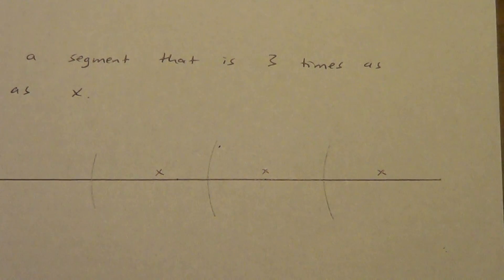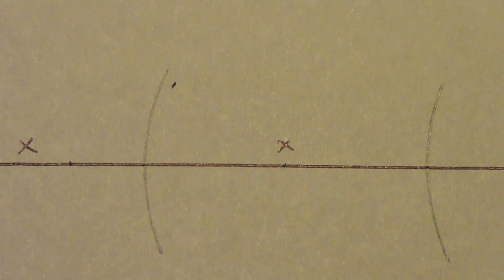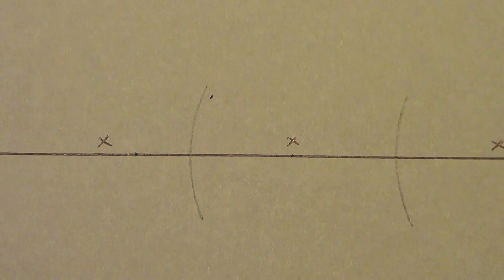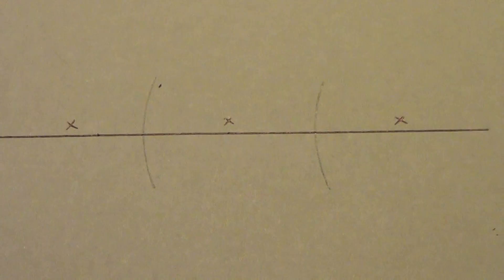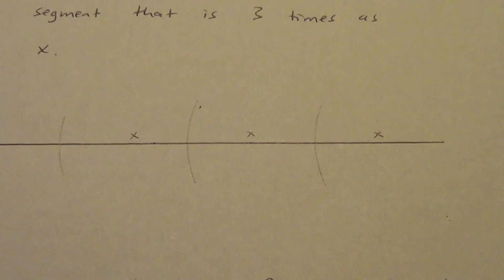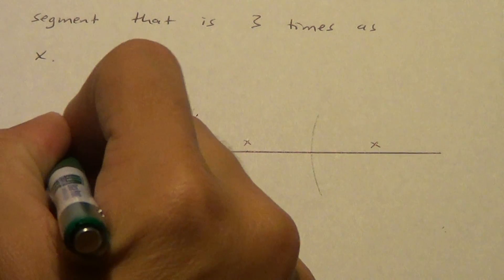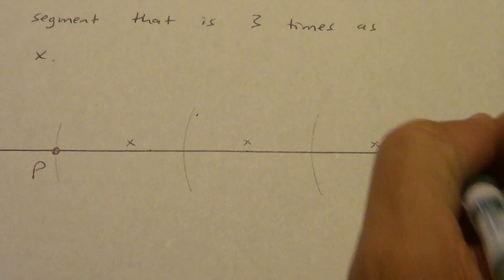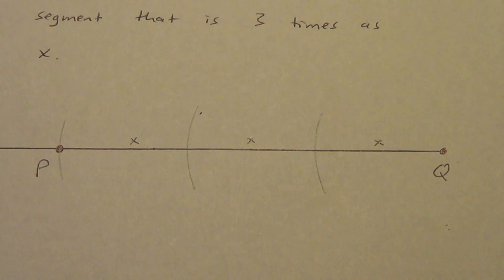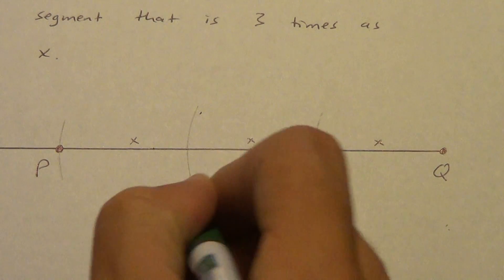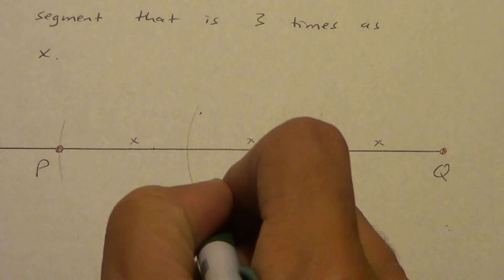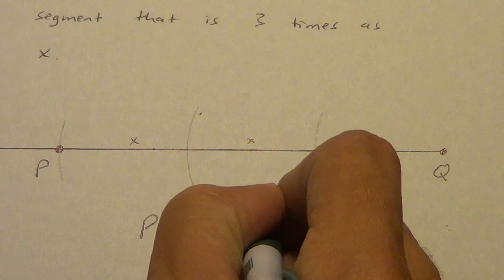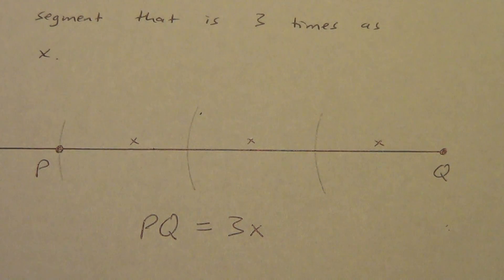I'll zoom in on that a little bit again so you can see it a little bit better. You see those X's there? See those little arcs? Arc is just part of a circle. I'm going to call this - we won't call it XY because that gets confusing - PQ. So PQ equals three X. Three X's.